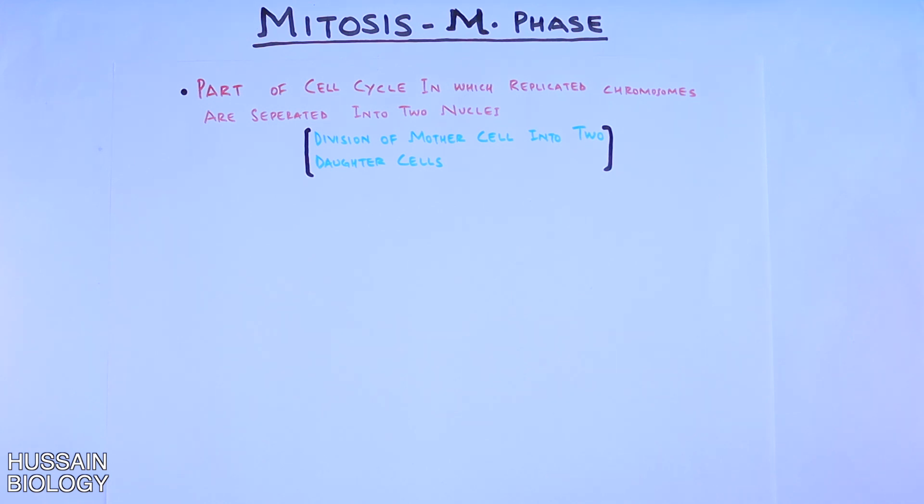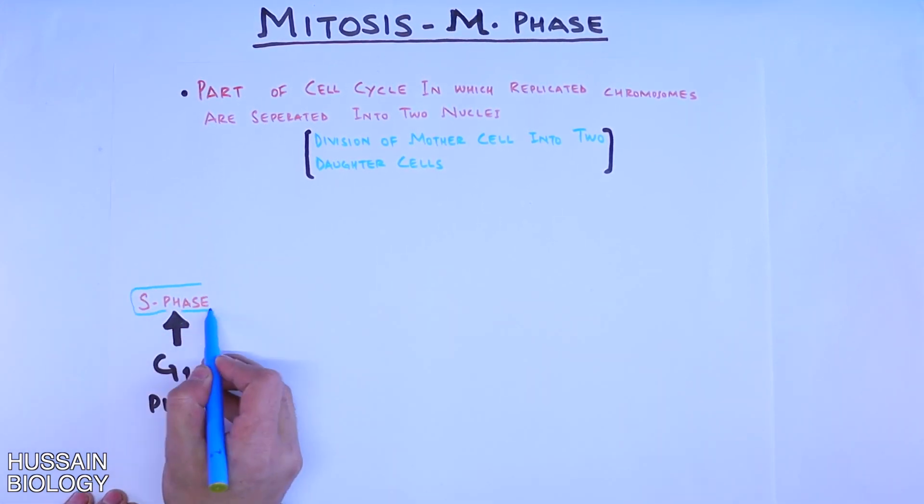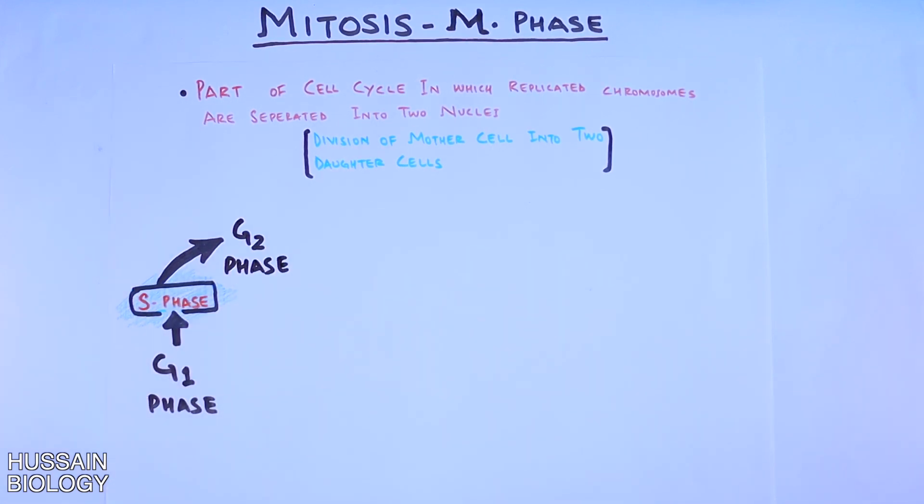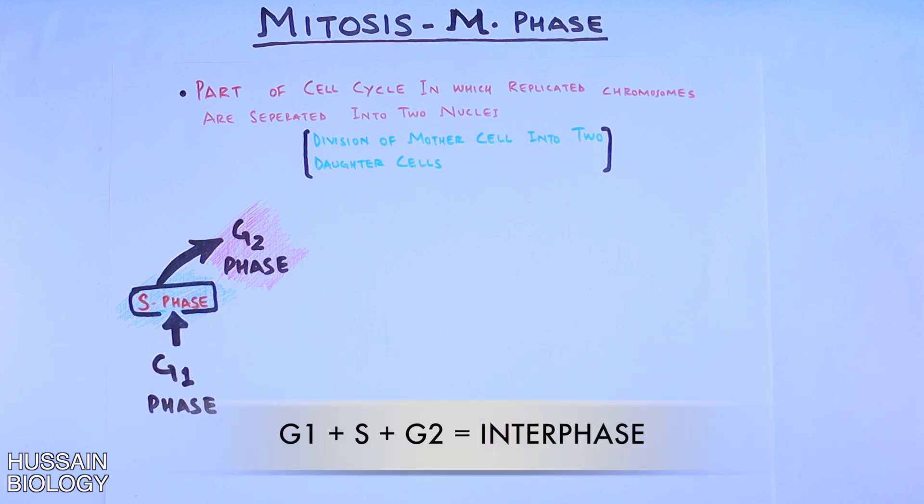If we look at the phases from the starting, first we have the G1 phase that proceeds into S phase, that's the synthesis phase. Then we have the G2 phase. All three phases—the G1 phase, S phase, and G2 phase—constitute the interphase.